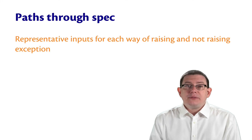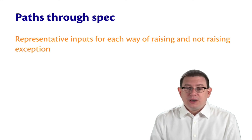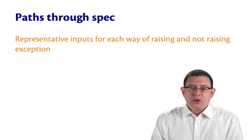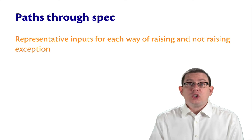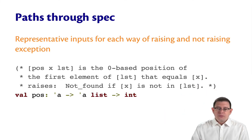Another way of testing paths through a specification has to do with exceptions. You could create black box tests of representative inputs for each way of raising or not raising an exception. Here's a specification for a function pos. This is the zero-based position of the first element of a list that equals x, and it raises not found if x is not in the list.